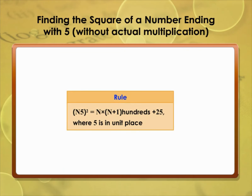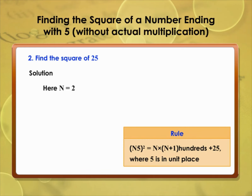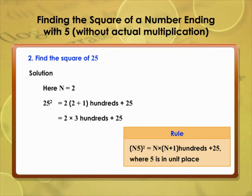Rule: for a number ending in 5, (n5)² = n×(n+1) hundreds + 25. Find the square of 25: here n = 2, so 25² = 2×3 hundreds + 25 = 600 + 25 = 625.